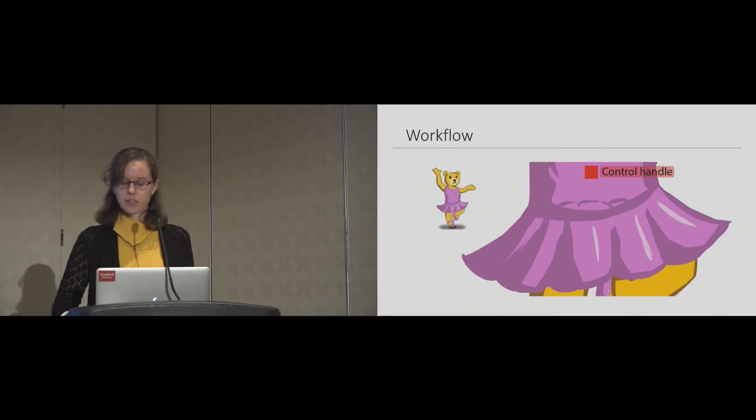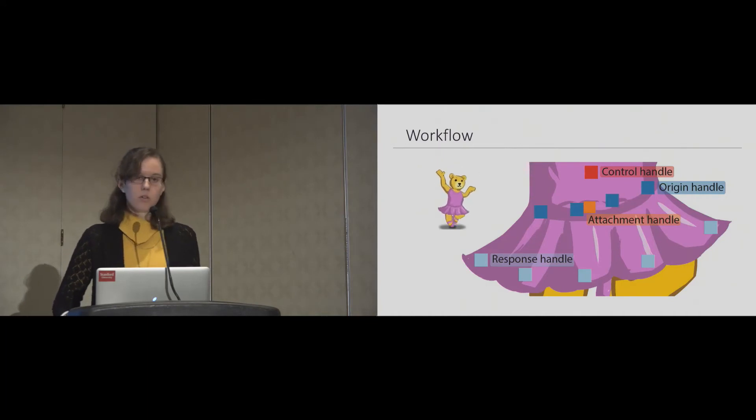In the workflow that we propose, there are a variety of handle types that artists can add to the artwork. The control handles are directly controlled by the user via face tracking, body tracking, or mouse and touch input, and these specify the primary motion of the character. Attachment handles specify constraints between parent and child layers. To apply our secondary animation rigs, the user adds two additional types of handles: origin handles inherit the primary motion of the character as specified by the performance. Response handles determine how the primary motion is propagated to different parts of the character. Only the control handles will be controlled during a user's performance; the movement of all the other handles is automatically computed.